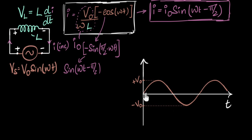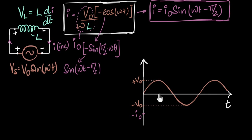Let's start at this point. At this point ωt is zero, therefore the voltage is zero. When ωt is zero, you get sine(0 − π/2) = sine(−π/2) = minus one, so I becomes minus I naught. So at this point we are at negative maximum — let's say minus I naught is somewhere over here. Now consider the point where the voltage is maximum, meaning ωt should be 90 degrees. When ωt is π/2, the π/2 cancels, giving sine(0) = zero. So at this point the current is zero — voltage is maximum but current is zero.